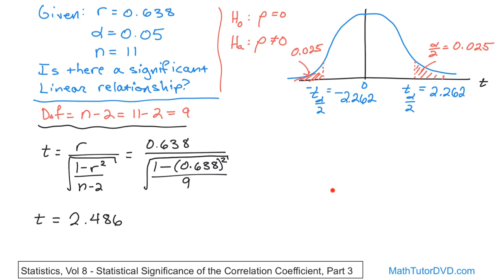That's the value of t that you get. Then you go and you take a look. Where does it fall? Here's 2.262. 2.486 is farther to the right, so I'll just go ahead and draw a line here. And it's somewhere over here. So it's definitely in the rejection region. So the conclusion is you reject the null hypothesis.